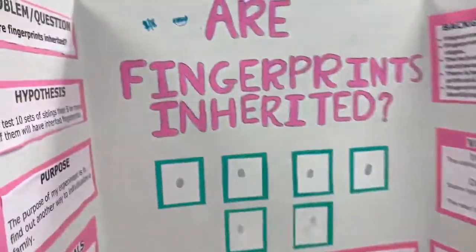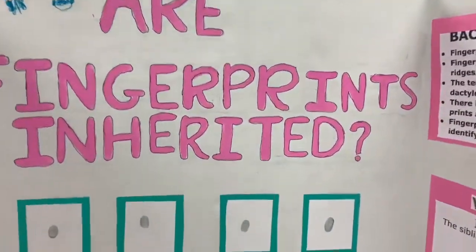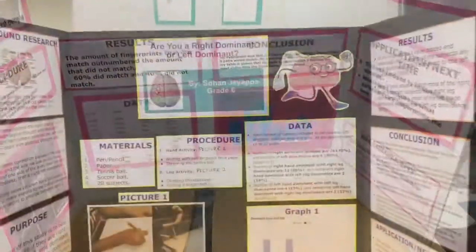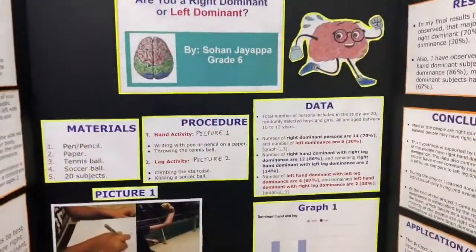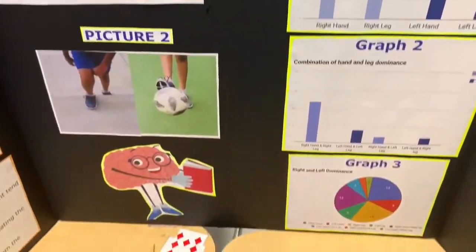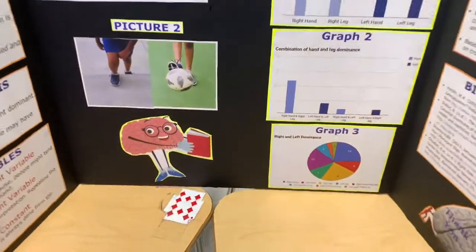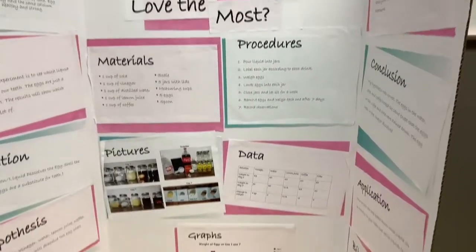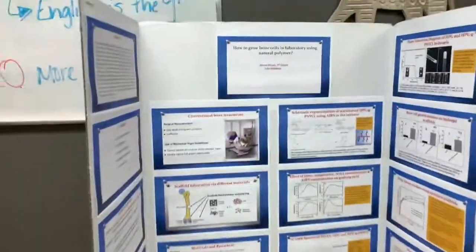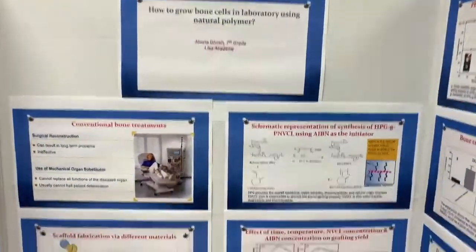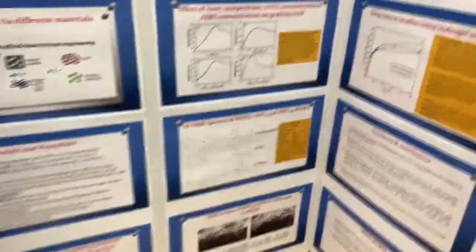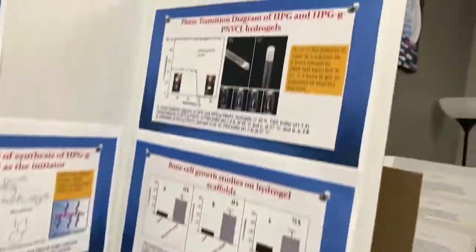Here we have 'Are Fingerprints Inherited?' — an interesting question. Then 'Are You Right Dominant or Left Dominant?' with some pictures. Up next is 'Which Drink Does the Tooth Fairy Love Most?'